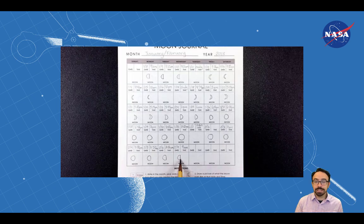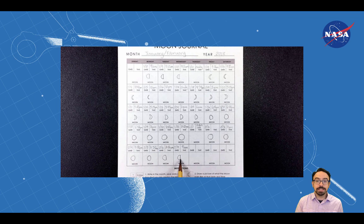Do the same thing for at least 30 days. If you can't see the moon one day, leave that day blank and fill it in later.